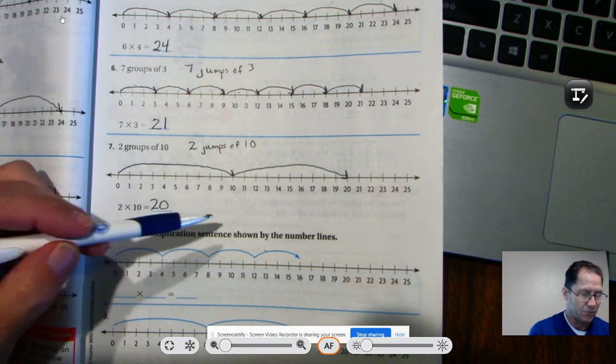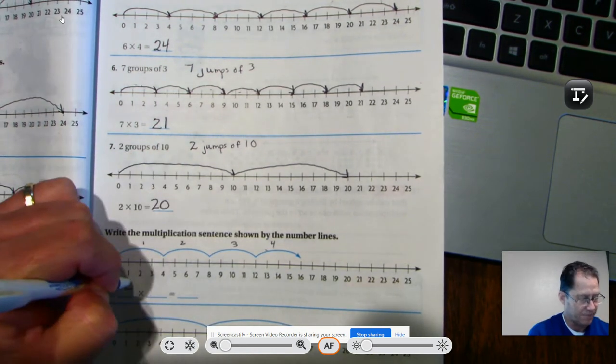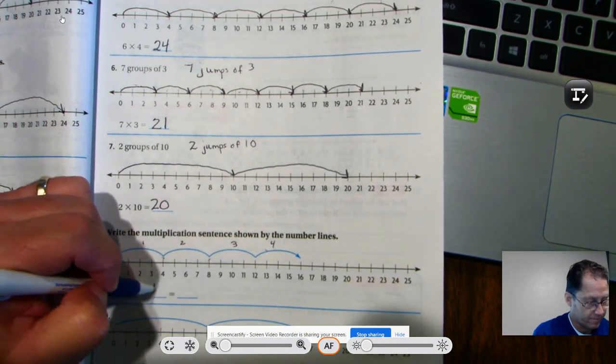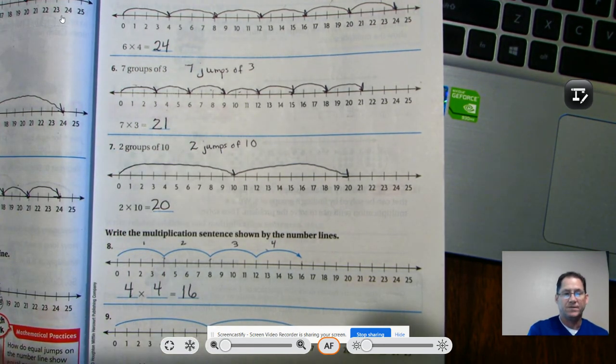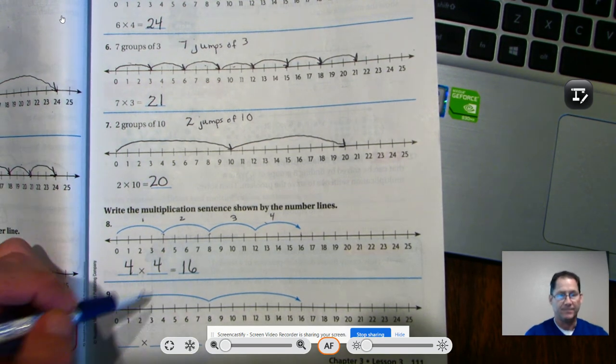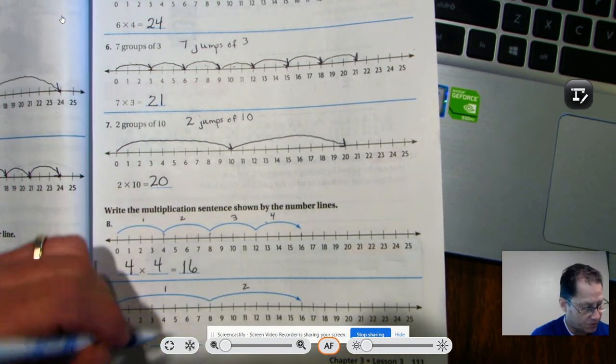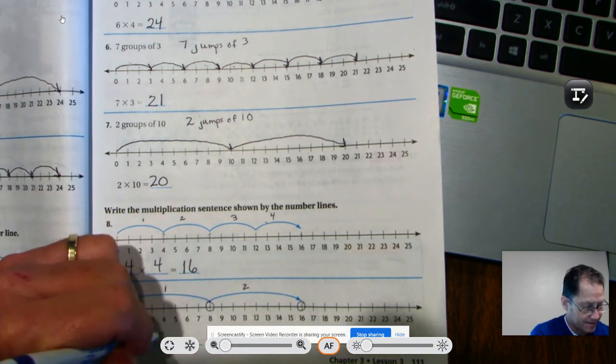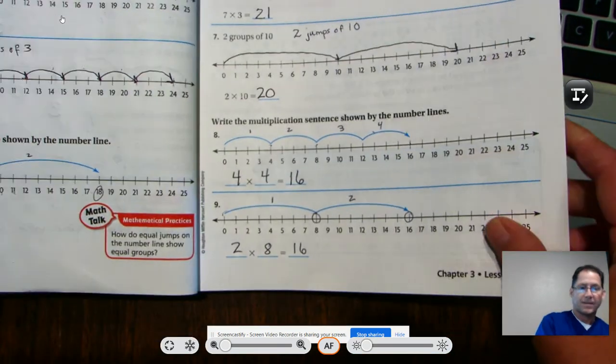Write the multiplication sentence shown by the number line. I see 1, 2, 3, 4. Four jumps or 4 groups. And in each group there are 4. And it stopped at 16. So 4 jumps of 4 equals 16, 4 groups of 4 equals 16. So the product of this multiplication problem is 16. In this one I see 1, 2 jumps. And in each jump I see 8. So 2 times 8 has a product of 16.